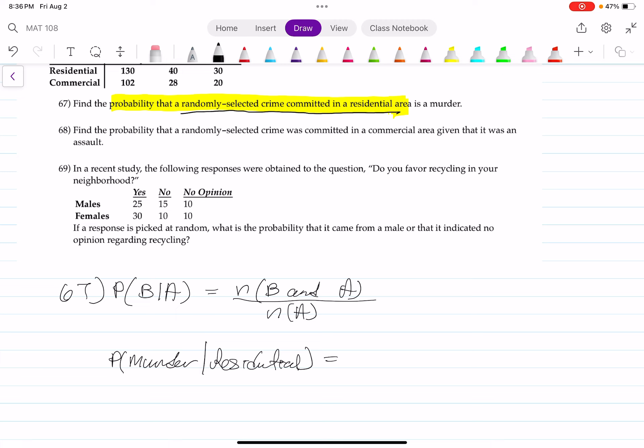So this equals to the total number of crimes that are murder and residential. Let me write that a little bit better and clearer. Divided by the number of crimes committed in a residential area. Let's once again rewrite this.